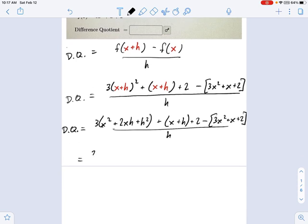What do we get? We get 3x squared plus 6xh plus 3h squared plus x plus h plus 2 minus 3x squared minus x minus 2.